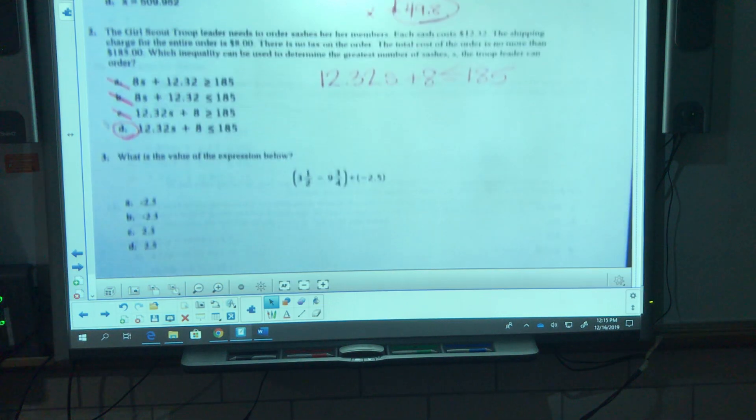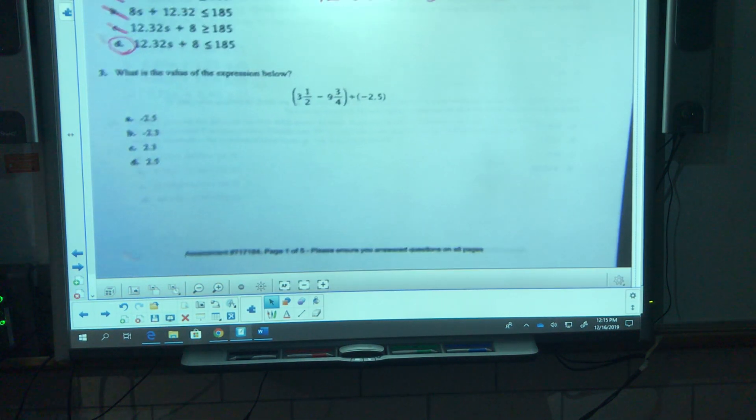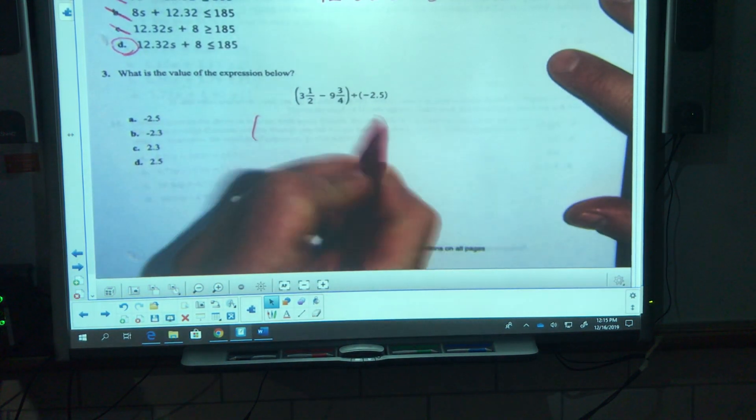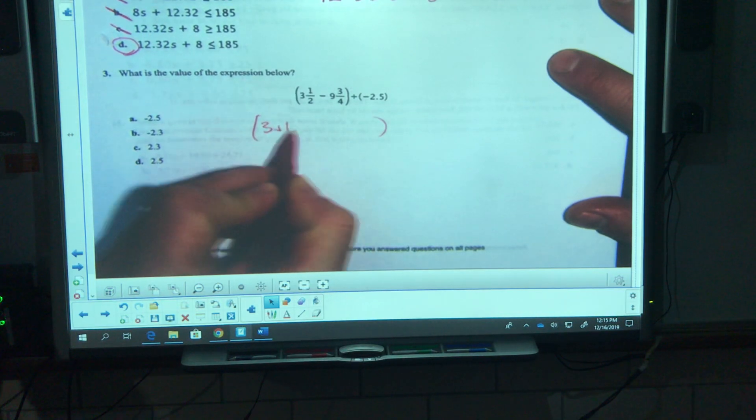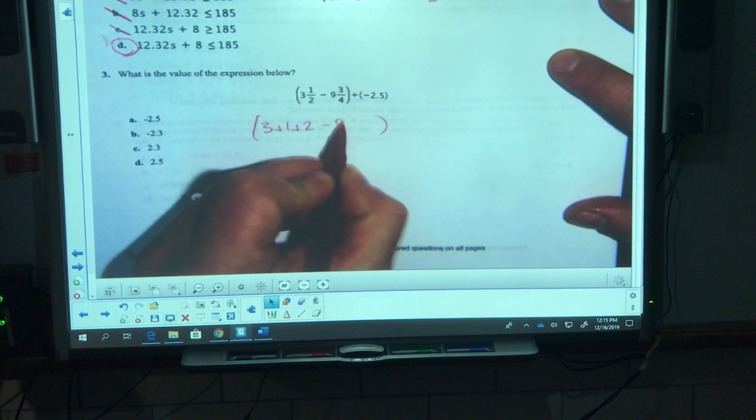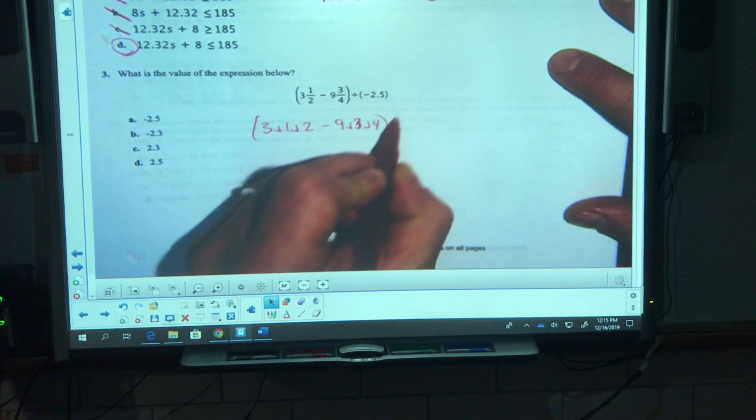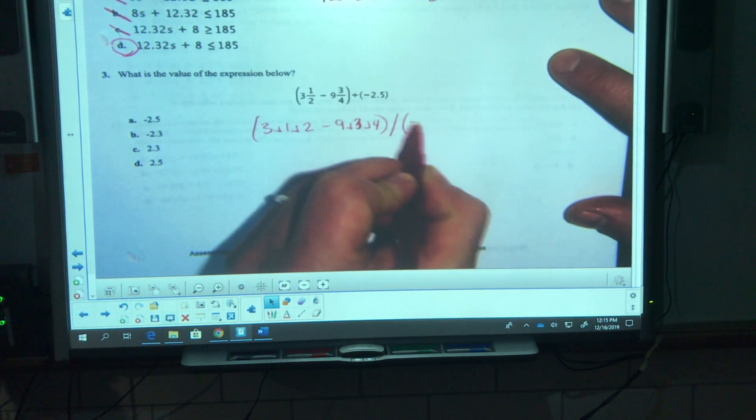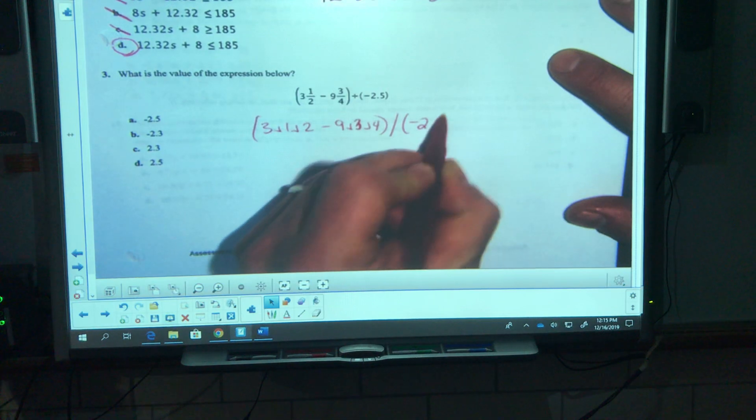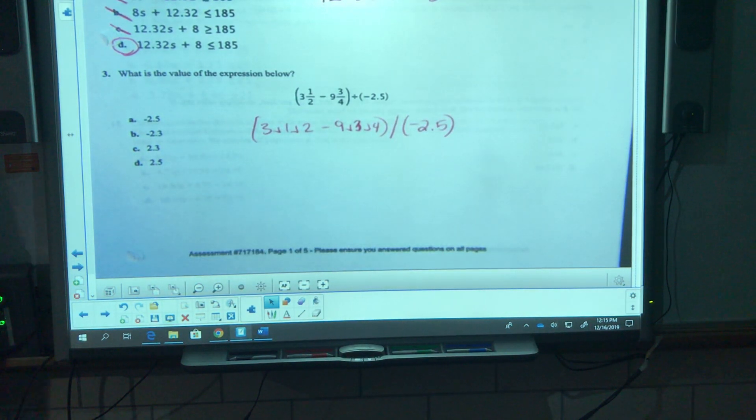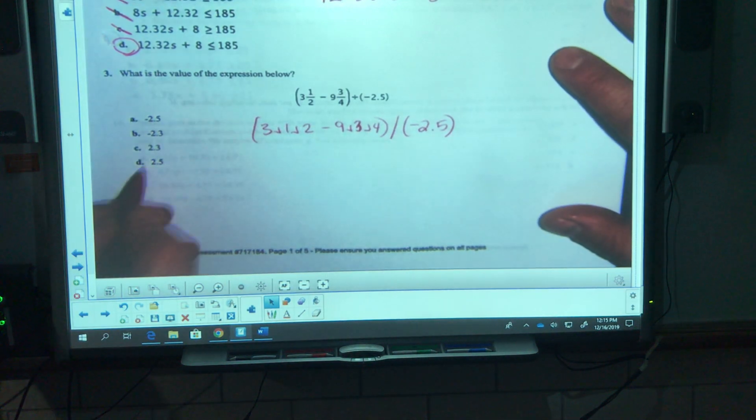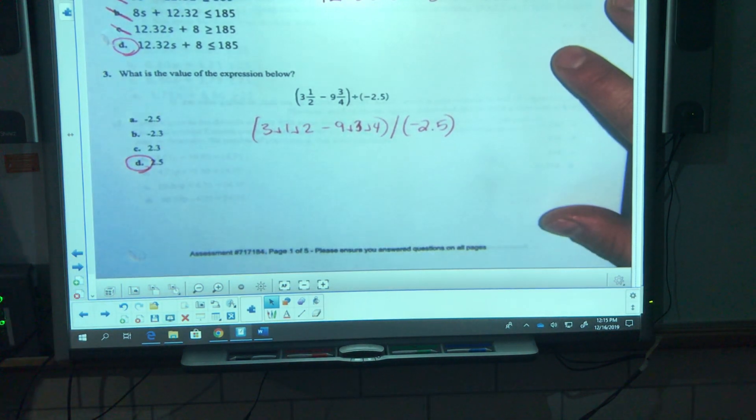Question number three, pretty straightforward with your calculator. I'm gonna type in, in parentheses, 3.175 minus 9.375, divided by in parentheses negative 2.5. All of that goes into my calculator all at once, let the calculator do the work, and we get D, 2.5.